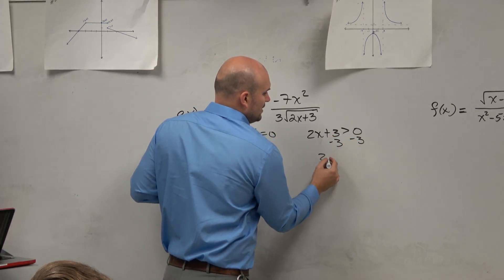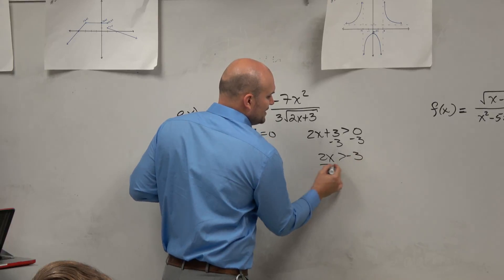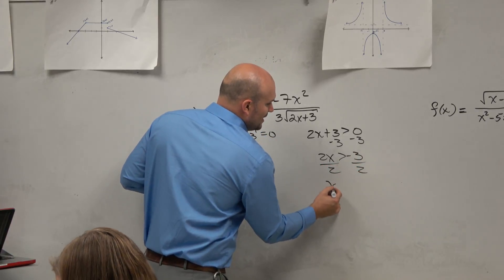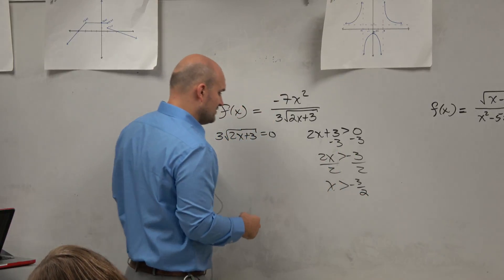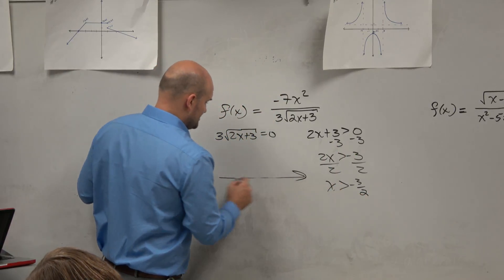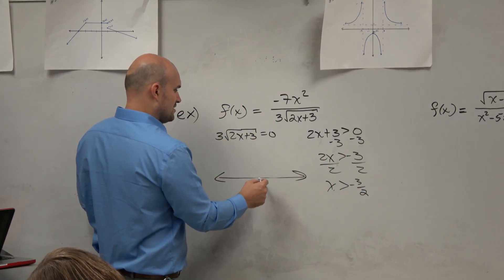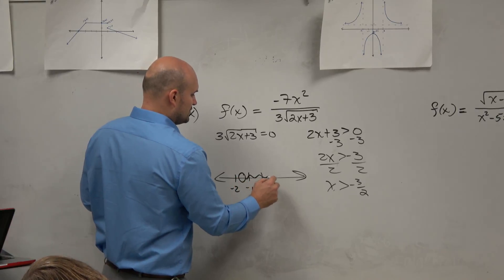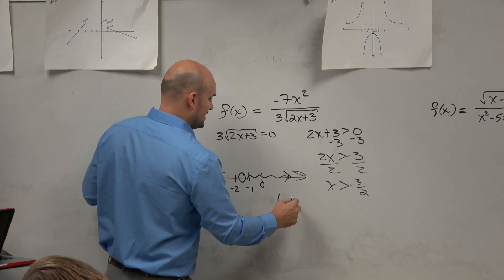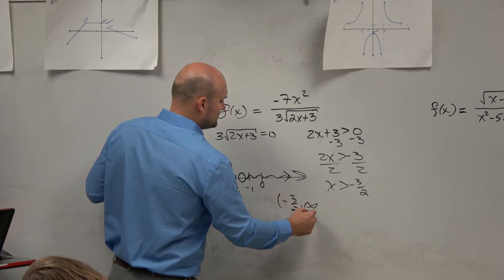So now, when I go ahead and solve, I have 2x greater than negative 3, divide by 2, divide by 2. x is greater than negative 3 halves, which is roughly 1.5. So now, I can just go ahead and graph that. So I do, here's 0, let's say here's negative 1, here's negative 2. Negative 1.5, all values greater than. So negative 3 halves, comma, infinity.